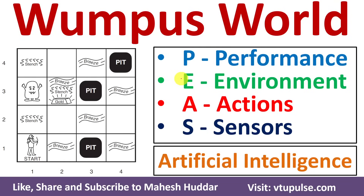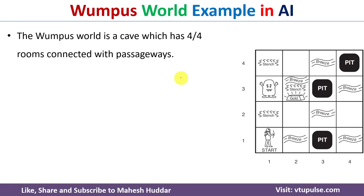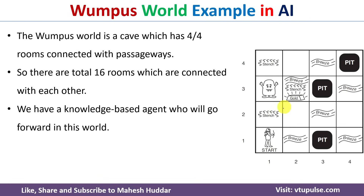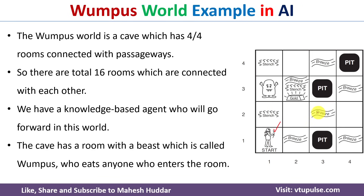Welcome back. In this video I will discuss the Wumpus World example in artificial intelligence, also the PEAS description of Wumpus World. Wumpus World is a cave consisting of a four by four connected rooms with passageways, meaning there are totally 16 rooms. There is a knowledge-based agent present in room number 1,1, and he can move forward in this world.